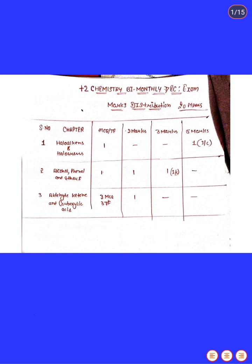The syllabus covers three chapters: Chapter 1 is Haloalkanes and Haloarenes, Chapter 2 is Alcohols, Phenols and Ethers, and Chapter 3 is Aldehydes, Ketones and Carboxylic Acids.